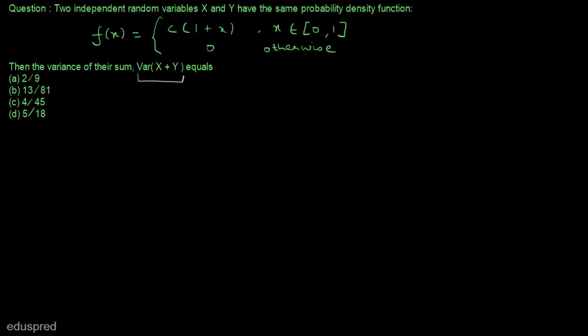First of all, note that in the probability density function, we are given a constant c. And we don't have this constant c in the options that are given to us. So this should give you a hint that first of all, we have to find the value of c. So let's find the value of c.